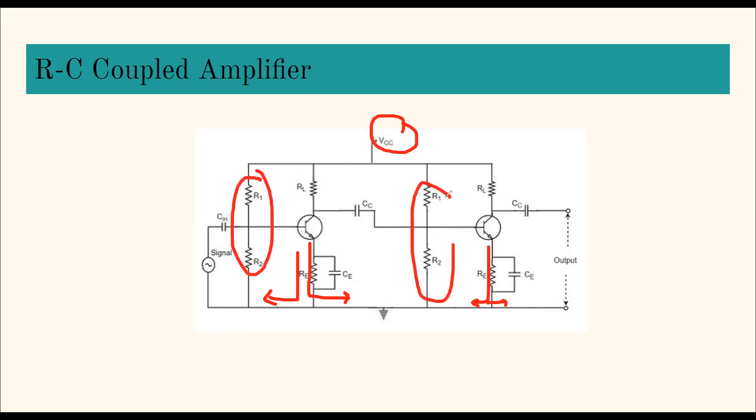A common power supply Vcc is used, and potential divider R1, R2 in both stages. A voltage divider bias is used and the resistance RE from the biasing and stabilization network. The importance of CE is already told - it bypasses any unwanted DC signals. It offers very low reactance path to the signal.